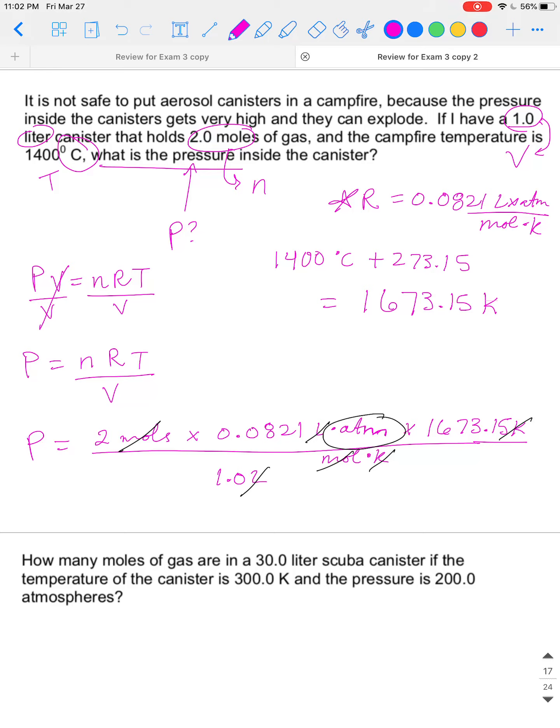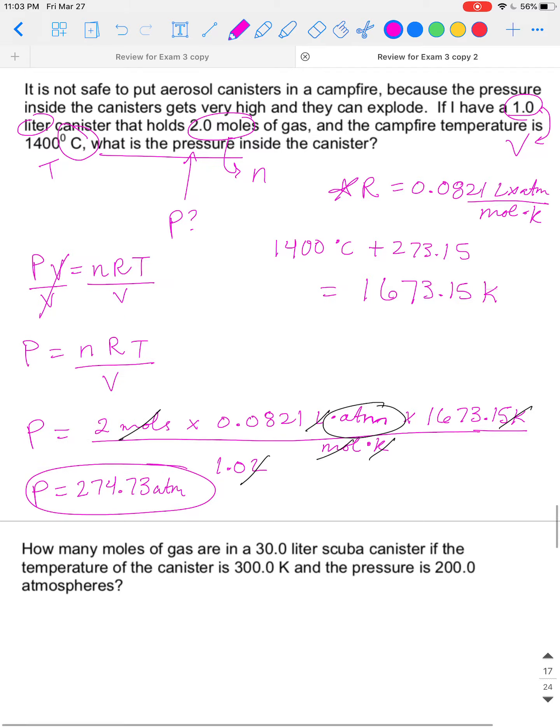Now we just plug it into our calculator. 2 times 0.0821 times 1673.15, and divide that by one. And your pressure is a whopping 274.73 ATM. That is a very high pressure.